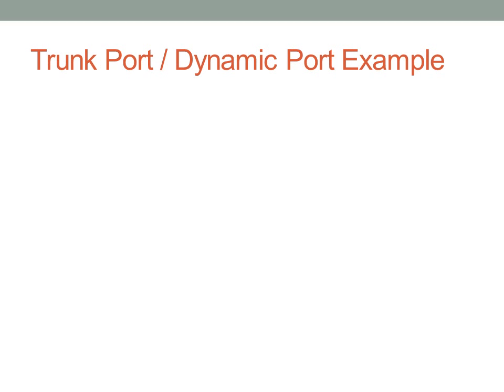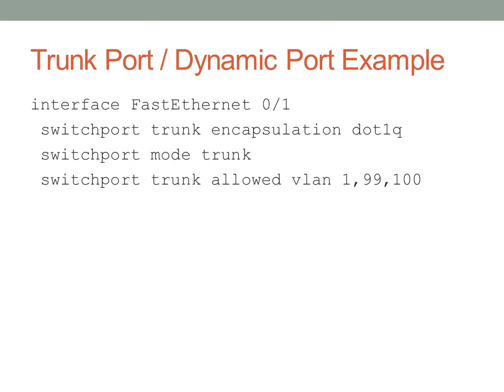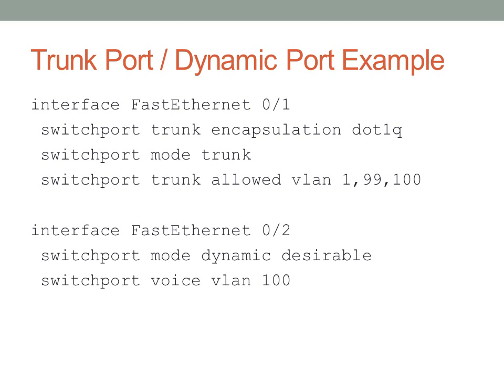Here are examples of trunk ports and dynamic trunk ports. The top example is a trunk port with specified encapsulation method and switchport mode trunk. There is also a command that specifies which VLANs are allowed over that port — you can list VLANs or give ranges. The second example is a dynamic desirable port with voice VLAN 100 configured, so that if it comes up as an access port it will still allow that voice VLAN.